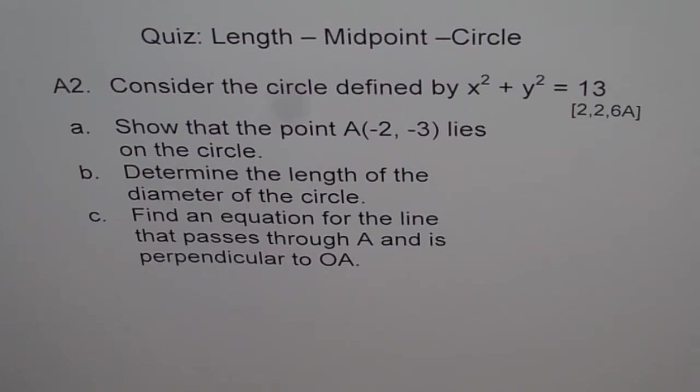Show that the point minus 2 minus 3 lies on the circle. Part B: Determine the length of the diameter of the circle. Part C: Find an equation for the line that passes through A and is perpendicular to OA.